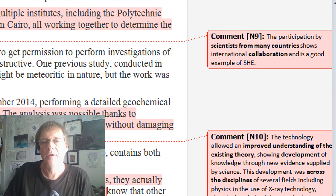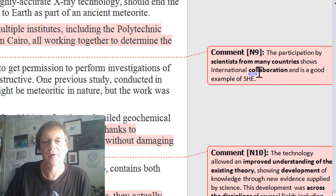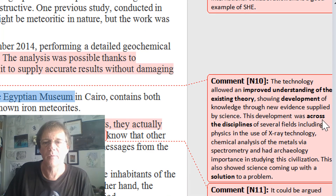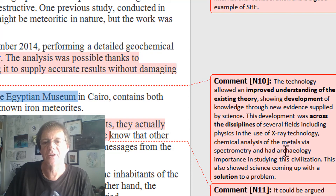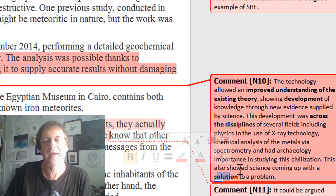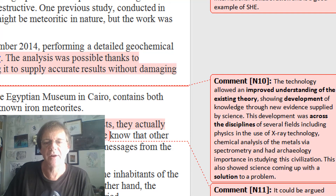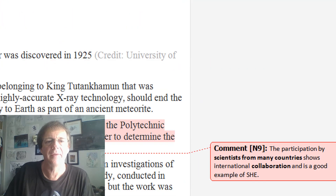So what is the Science and Human Endeavour involved here? Not only is international collaboration being used to show the collaboration — and obviously that has to be communicated effectively between different people — you've also got evidence that there's development of theory going on because you have science from many disciplines: the physics of X-ray technology, the chemical analysis of metals, and archaeology linked to this civilisation. Scientists have come up with a solution to a problem others have had. The international collaboration has also verified existing theories, providing more evidence of the collaboration. So there are a couple of SHE examples you could draw from that.